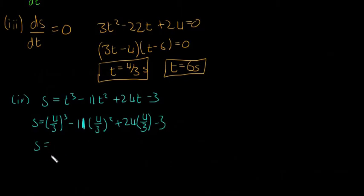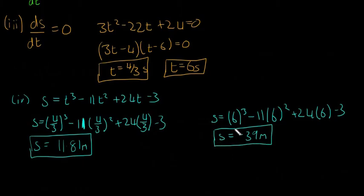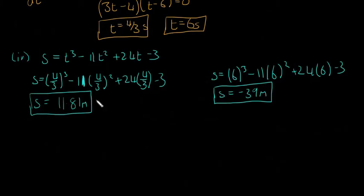So s is going to be equal to 4/3 cubed minus 11 times 4/3 squared plus 24 times 4/3 minus 3. And that will give us that s equals 11.81 meters. So when it stops the first time, it's going to be at 11.81 meters to the right. And the second time, s equals 6 cubed minus 11 times 6 squared plus 24 times 6 minus 3. And that will give us that s equals minus 39 meters. So the second time it stops, it's way over to the left. So they're the positions where it stops moving.